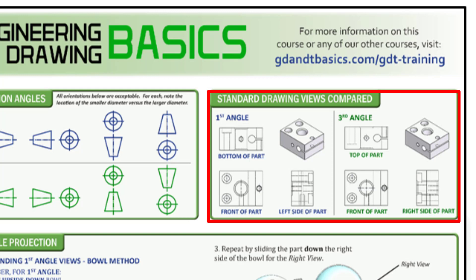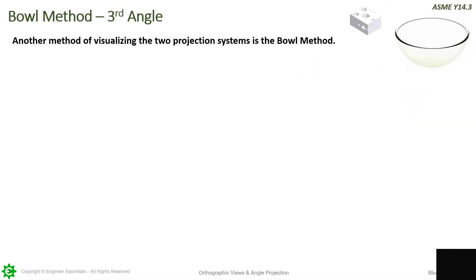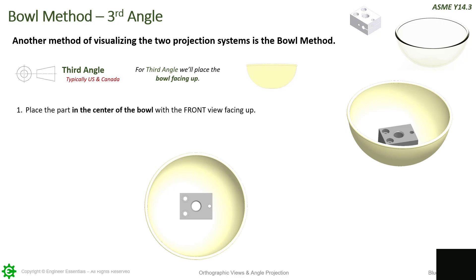Next up, we're going to look at this bowl method. This is intended to help clarify this. This is actually our favorite way to visualize third angle versus first angle parts. Let's start once again with third angle, typically used in the U.S. and Canada. For third angle, imagine having a big salad bowl on your desk and you put your part in the salad bowl. So first, place the part in the center of the bowl with the front view facing up. That is your front view. Remember, this will probably be your central view on your drawing.